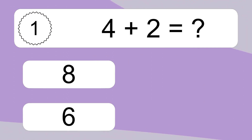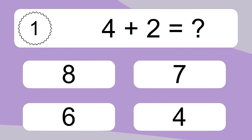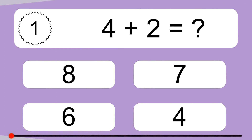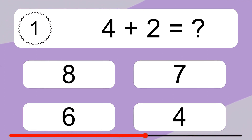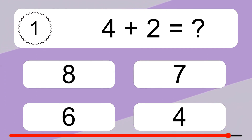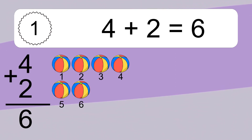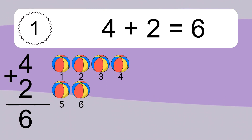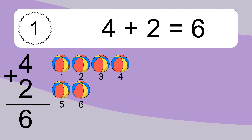4 plus 2 equals what? 4 plus 2 equals 6. Let's count it. 1, 2, 3, 4, 5, 6.